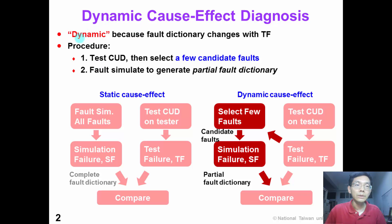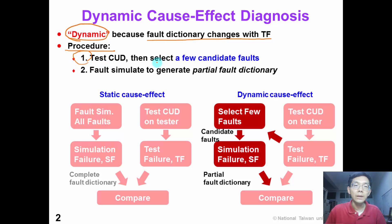We call this a dynamic technique because the fault dictionary can change with test failure. The procedure to perform dynamic cause-effect diagnosis is: first, test the CUT on the tester and then select a few candidate faults. Second, fault-simulate these candidate faults to generate a partial fault dictionary.